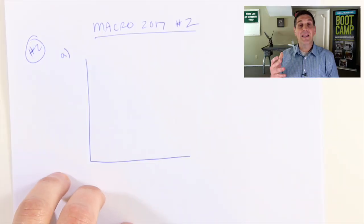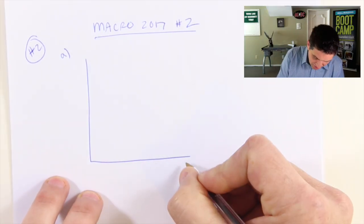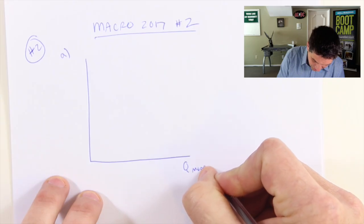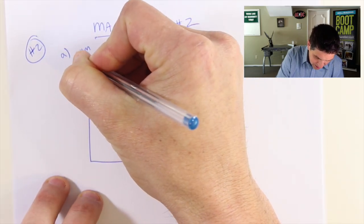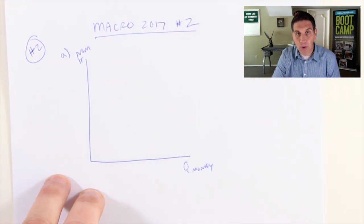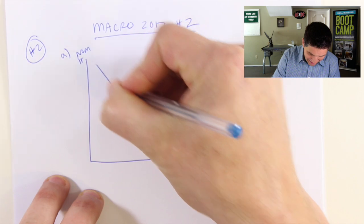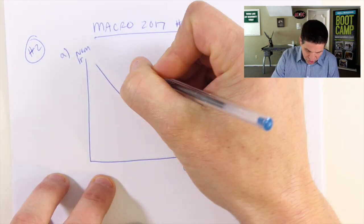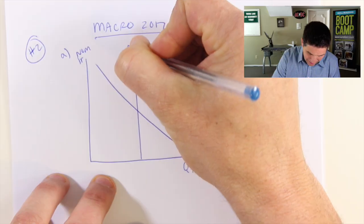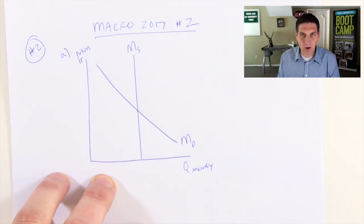The money market graph looks like the Phillips curve—same shape but different concepts. The x-axis is the quantity of money, and the y-axis is the nominal interest rate. For speed, I'm abbreviating, but you should write it out. We've got downward-sloping money demand and vertical money supply. You can label this SM, supply of money, or money supply—any of those work.